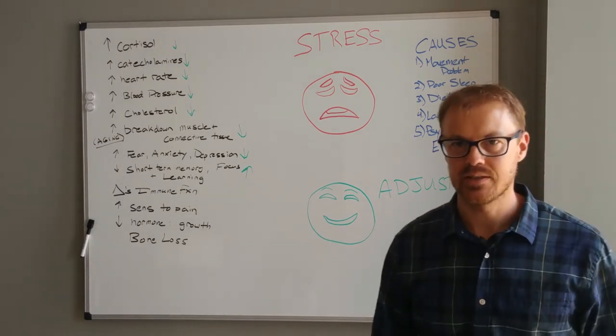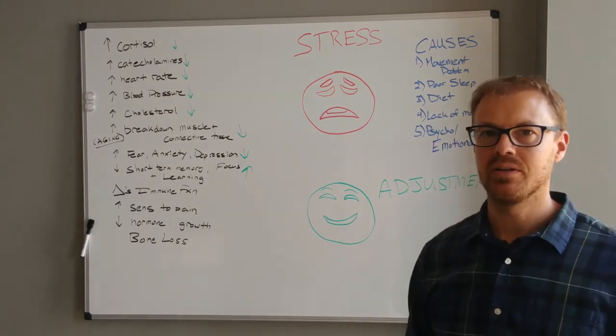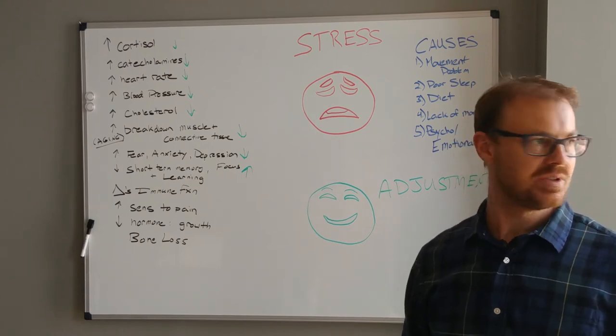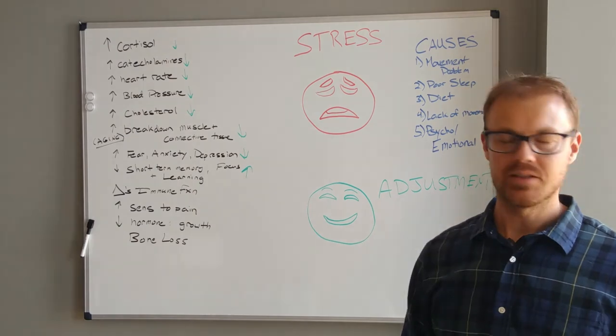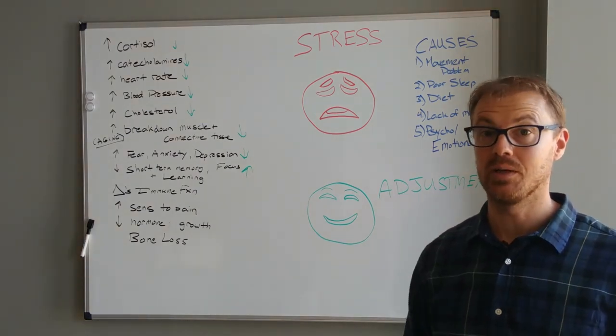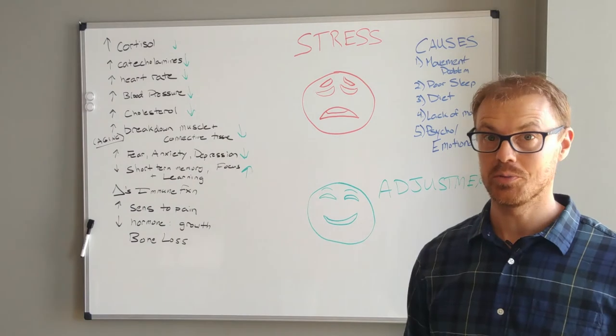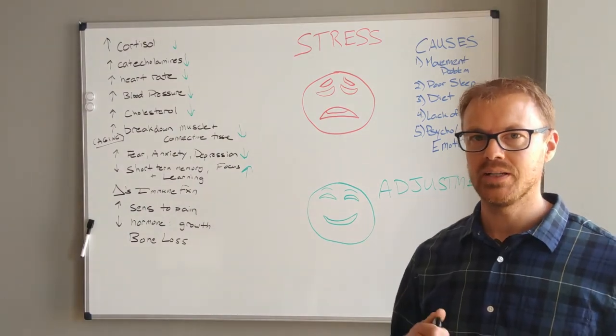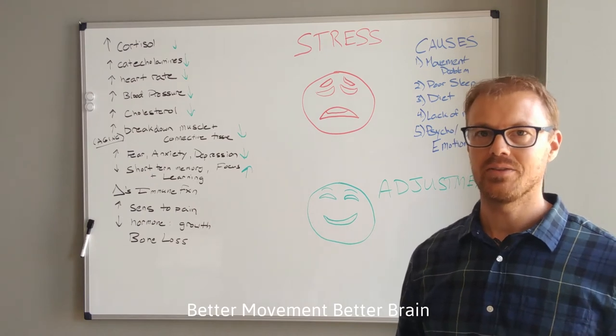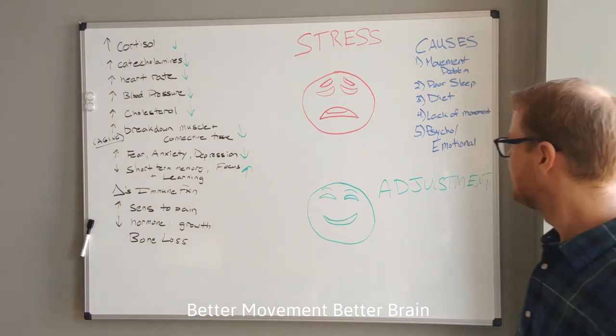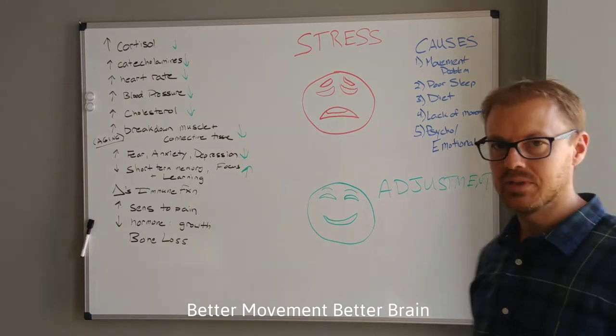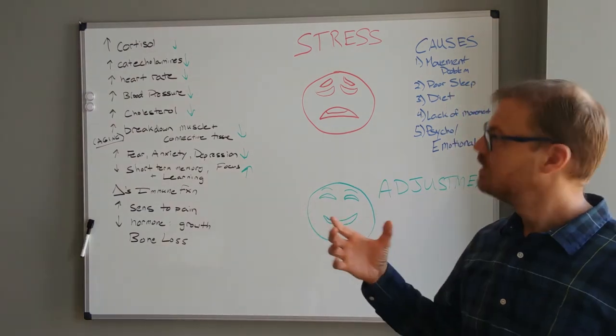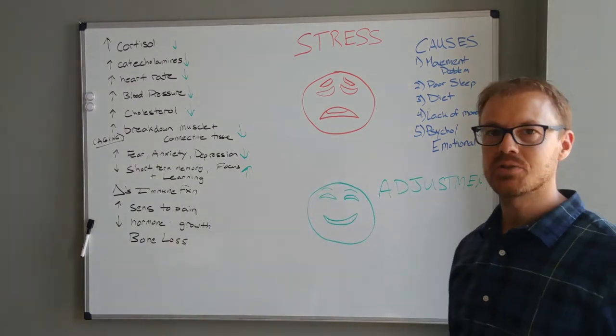What it's doing is increasing what they call mechanoreceptive input. That's basically when you're moving the joints, the information that they're sending to your brain when they move the right way, how they're supposed to, that makes your brain happy. That tells your brain, hey, things are okay out there. This is safe. So as I do the adjustment, your brain's getting these signals and it starts to decrease that stress response.